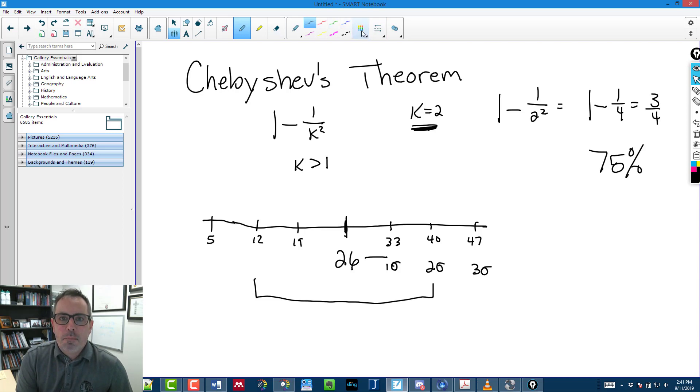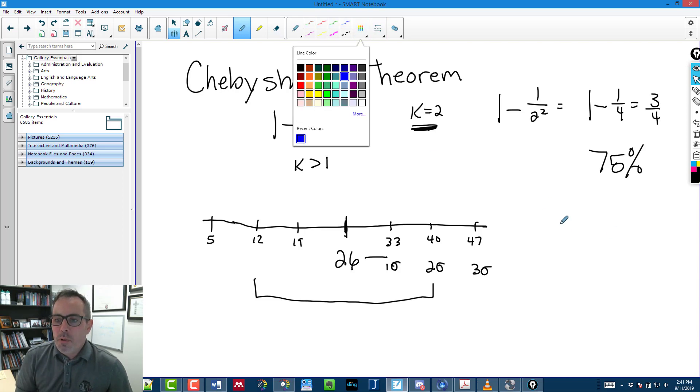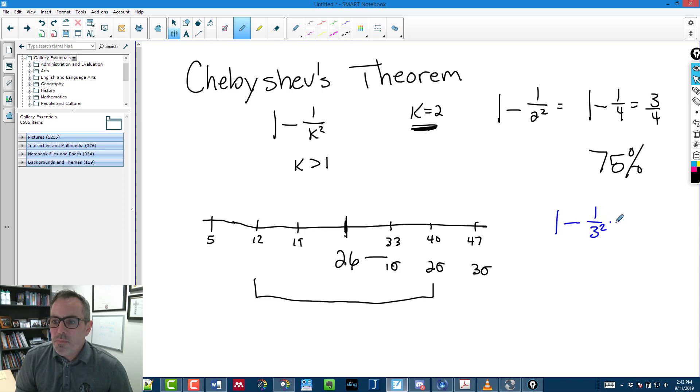If I do that now with a different one, like three standard deviations is 1 minus 1 ninth, which is 8 ninths, which is approximately, pull out the calculator, 8 divided by 9, 88.9%.